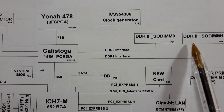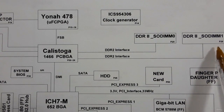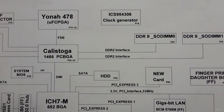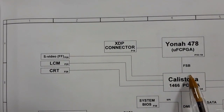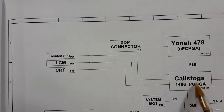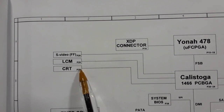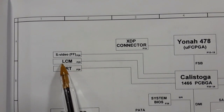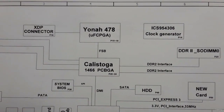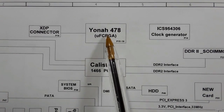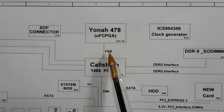The RAM is DDR2, as shown in pages 25 and 26. The GMCH, which contains the integrated graphics card, is connected to screen ports: CRT, LCM, and S-Video.